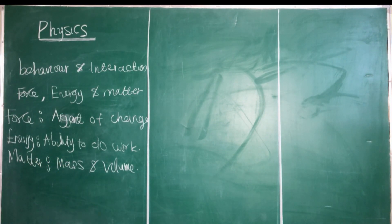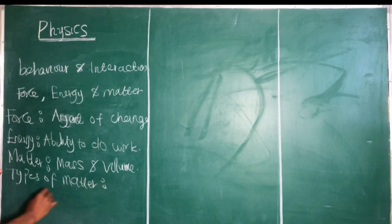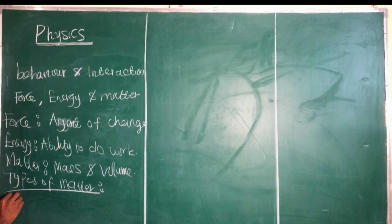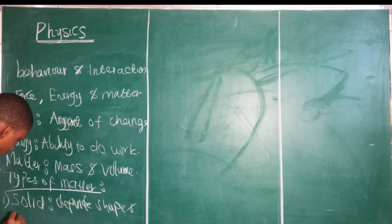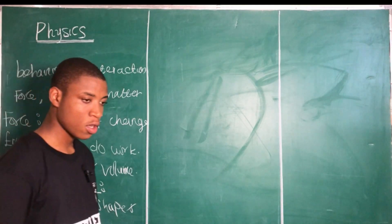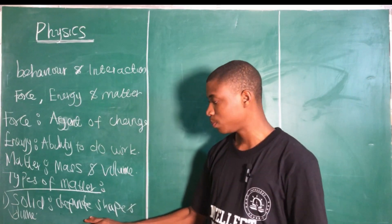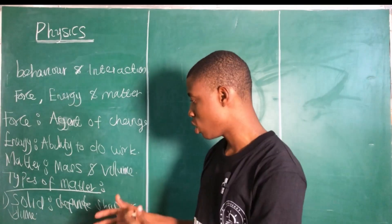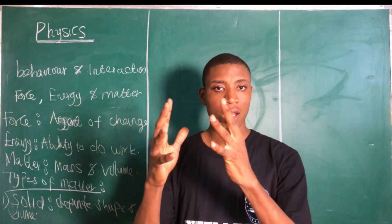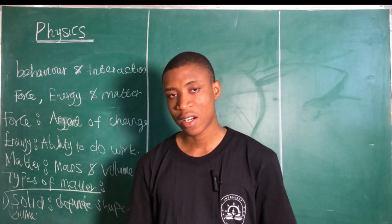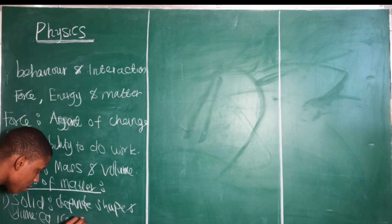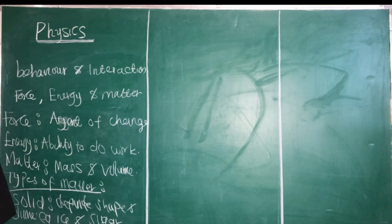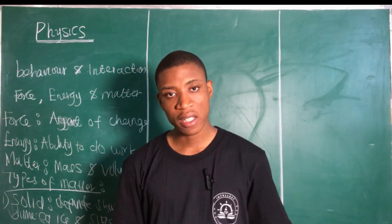Before we talk about the molecular treatment and properties of matter, let's cover the types of matter. The first type is solid. A solid has a definite shape and volume because the molecules that make up the solid are held closely together and move slowly. Examples of solids are ice and sugar.